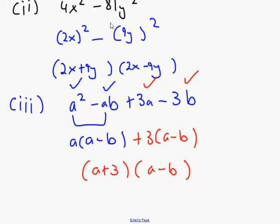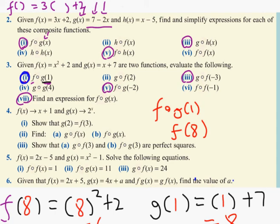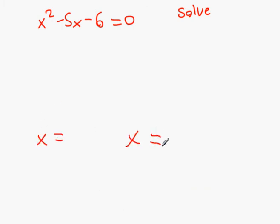After that guys we now have solve questions. The solve questions are solve each of the following. x squared minus 5x minus 6 equals 0. It's a solve. What can you tell me about solve questions? How is it going to end? It's going to end like this, no matter what.